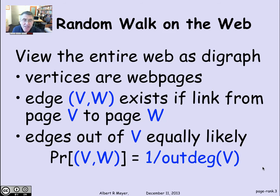To be more precise, the probability of the edge that goes from V to W is 1 over the out degree of V. That is, all of the out degree of V edges leaving vertex V get equal weight.